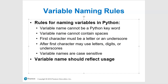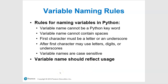Additional naming rules: the first character must be a letter or an underscore — you cannot start with a number. After the first character, you can use letters, digits, or underscores. Variable names are also case sensitive, which is very important. Finally, variable names should reflect their usage, so use descriptive names in your code.